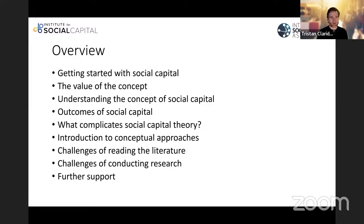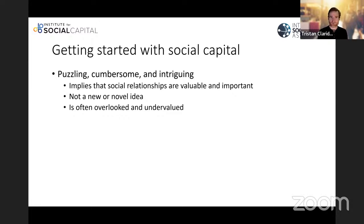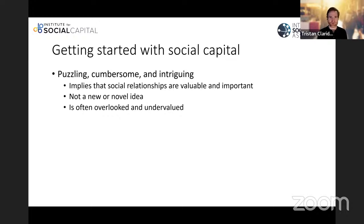I'll outline what complicates the theory and give you at least one or two approaches to understand differences in the literature. I'll discuss some challenges of reading the literature and give you pointers on how to navigate it, and obviously some challenges of conducting research. Social capital is a bit puzzling and cumbersome, but it is very intriguing. Overall, it implies that social relationships are valuable and important — that we can get value, share, help, care, get information, and get social introductions.